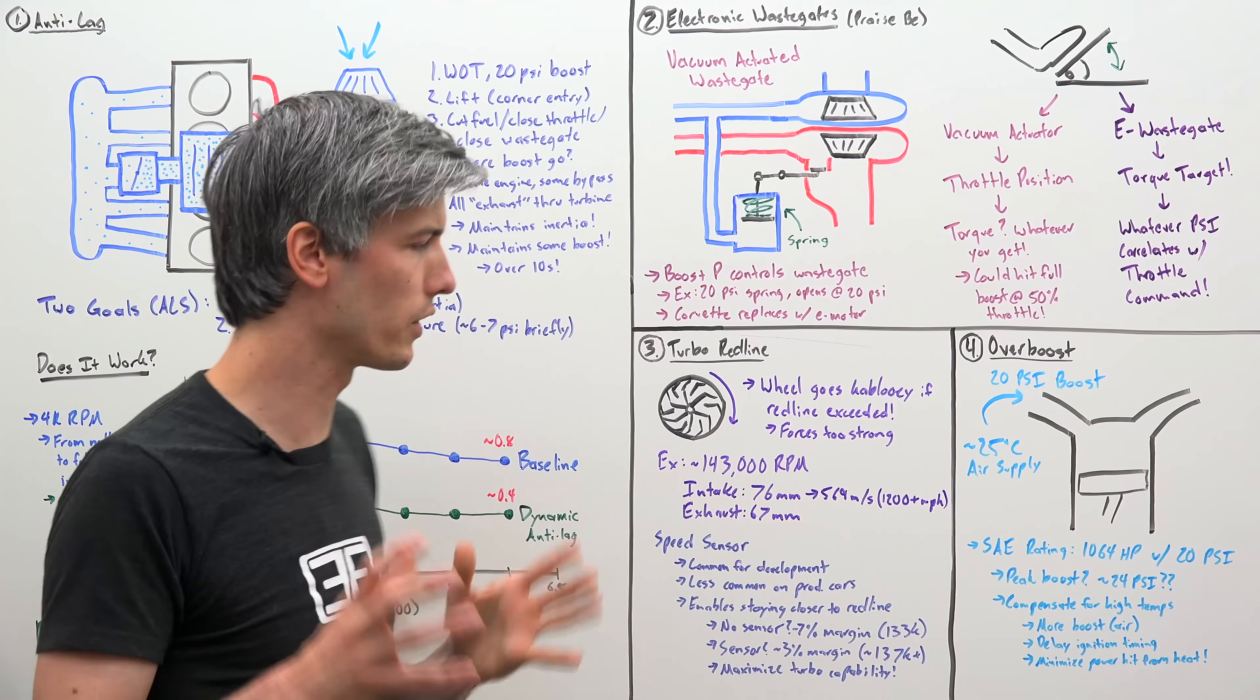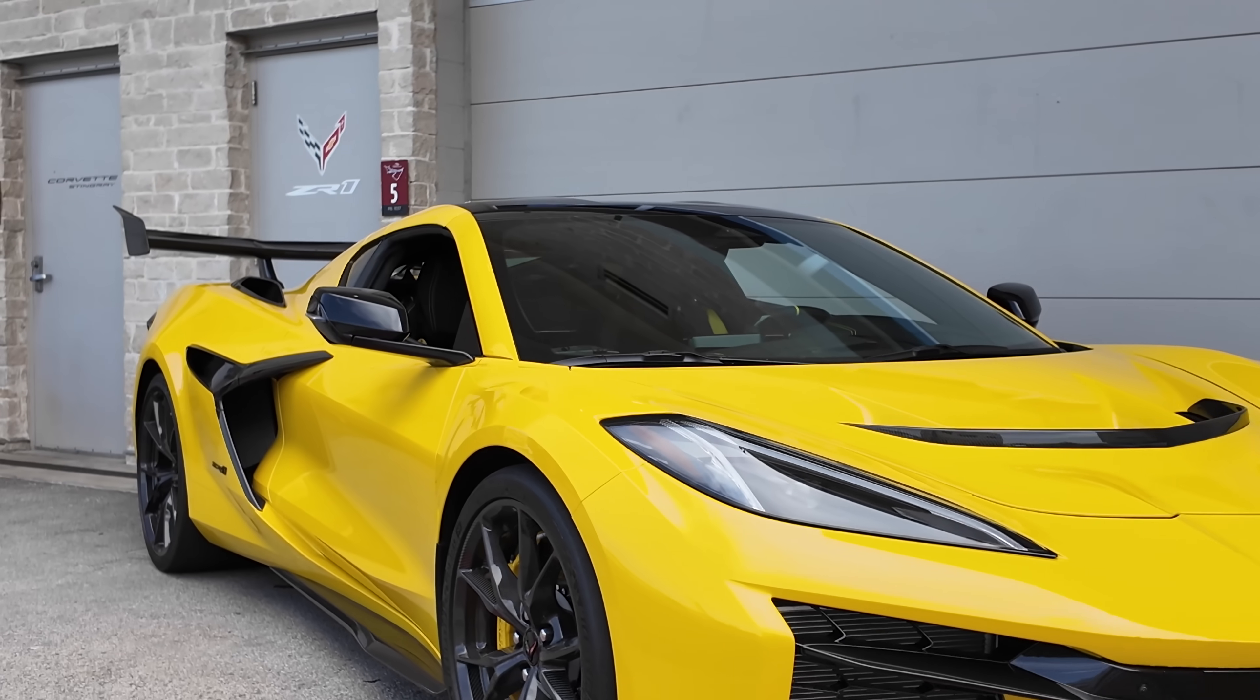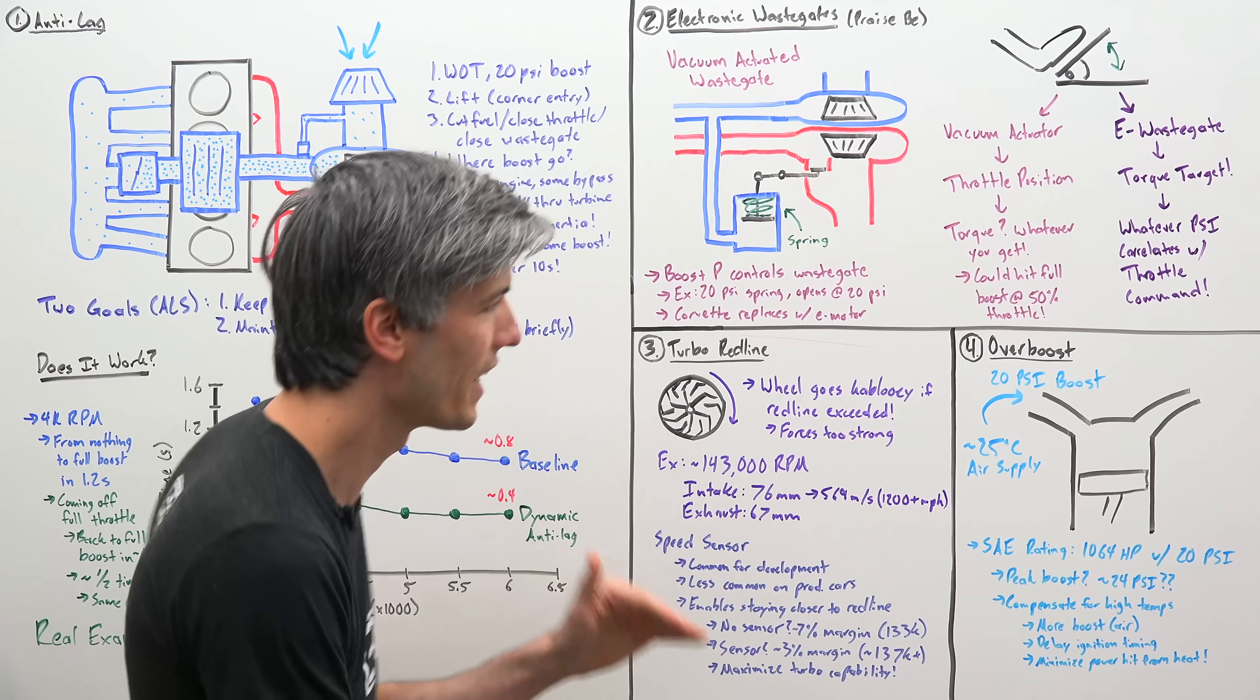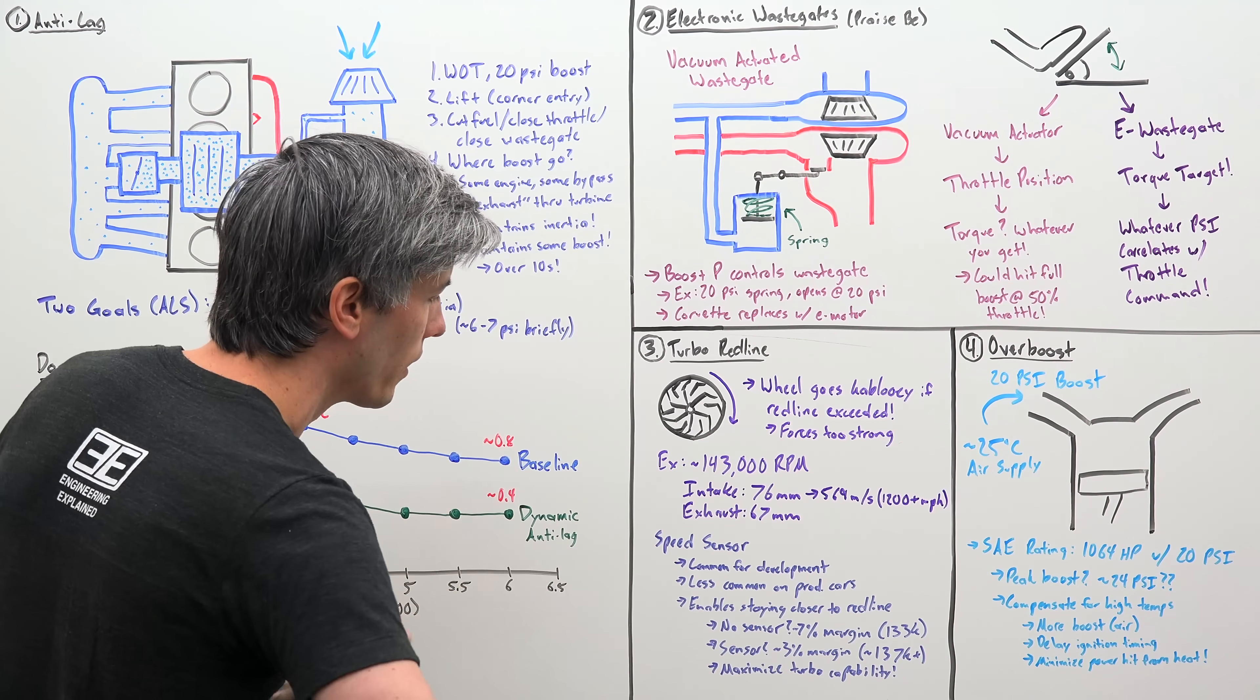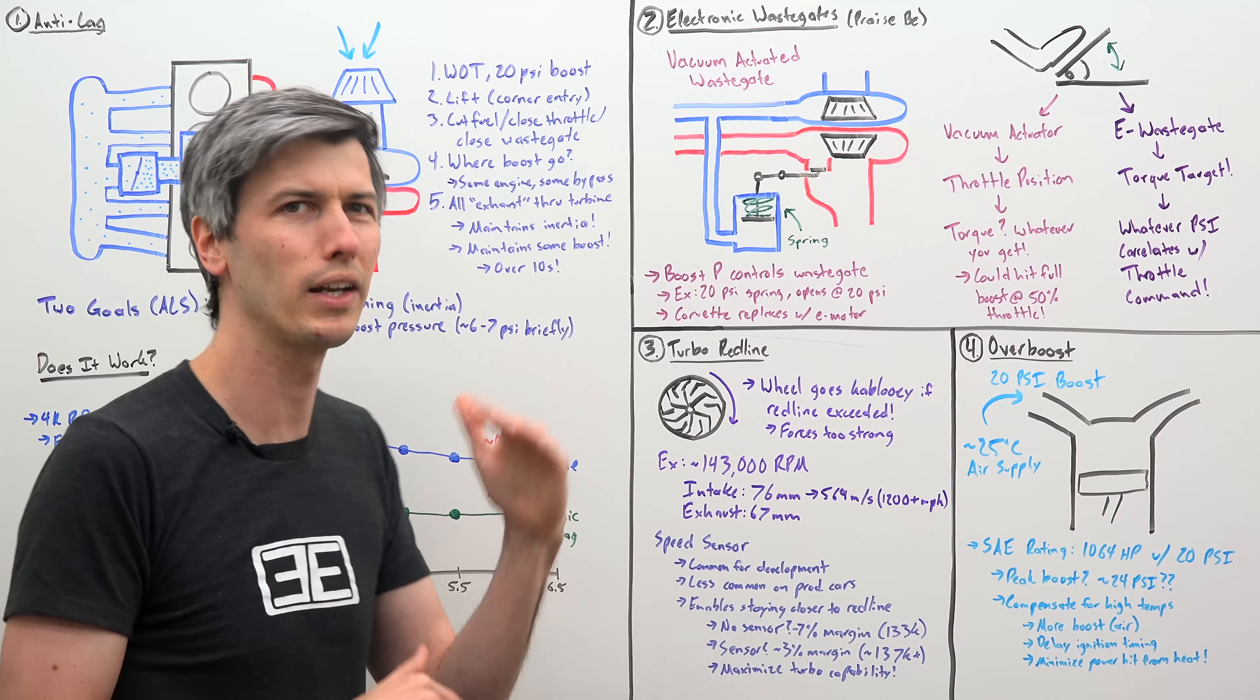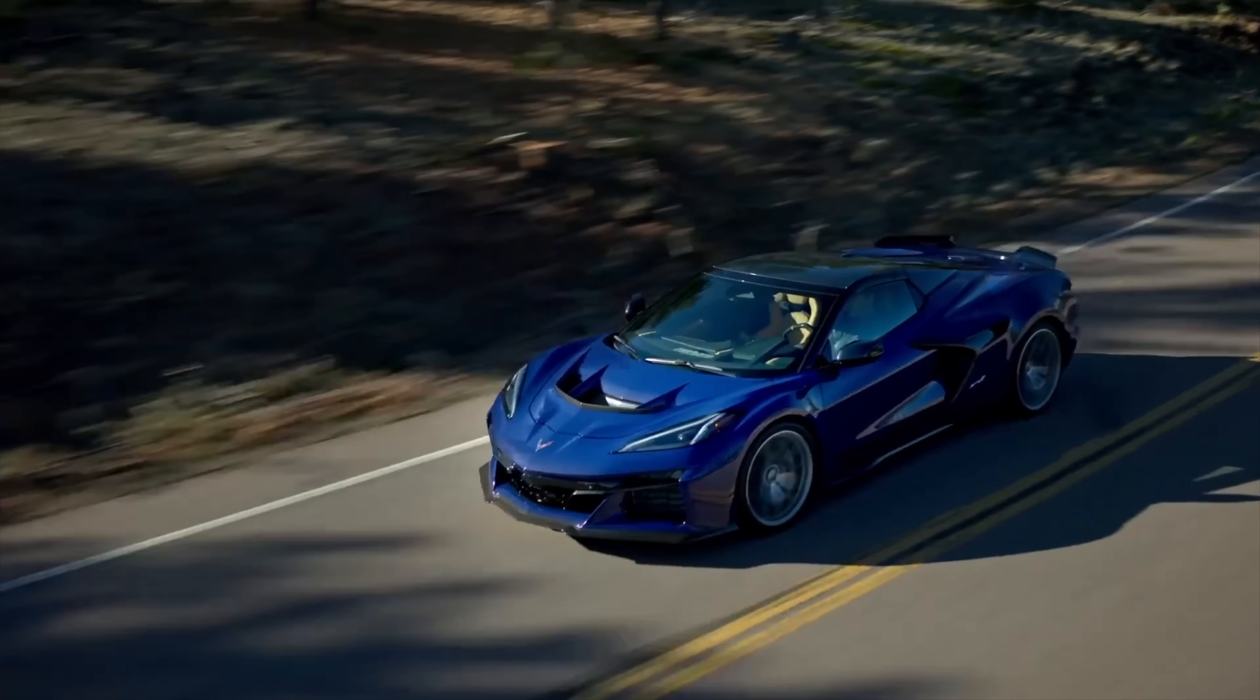This isn't unheard of within the industry, but plenty of cars will just use them in development and then on production cars, they won't have that speed sensor. But what they say this enables by having that speed sensor is they can run the turbo closer to red line more confidently because they know exactly what speed they're at. So they can leave about a three percent margin to red line rather than about a seven percent margin, allowing them to maximize that turbocharger's capability.